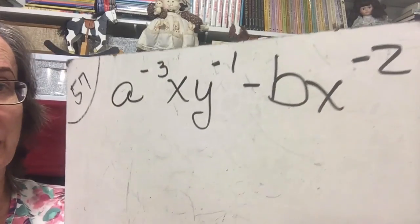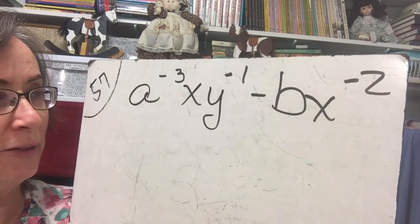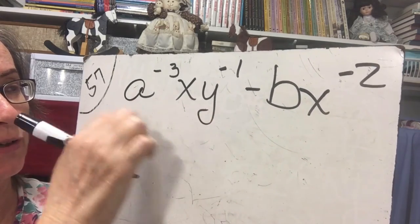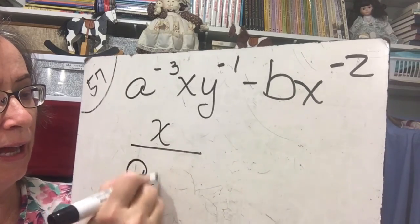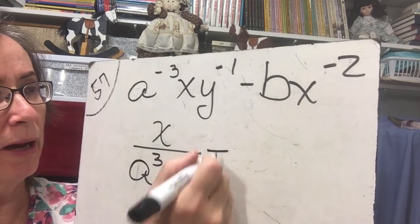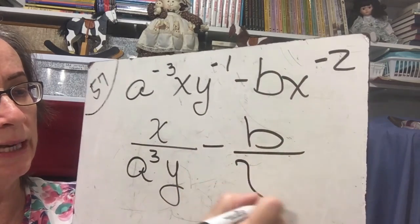Last practice problem. Okay, so copy it down and go and do it on your own. So we're going to look at this one first and the a's and the y's are going to come downstairs. We're going to have x over a cubed y to the 1 is just y minus b stays upstairs x squared comes downstairs.